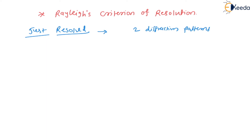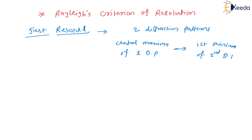The criteria is: the central maxima of the first diffraction pattern has to coincide with the first minima of the second diffraction pattern, and vice versa. This is the condition for two objects to be just resolved — the central maximum of the first diffraction pattern must match with the first minima of the second diffraction pattern. Now we will check the three conditions for resolution.